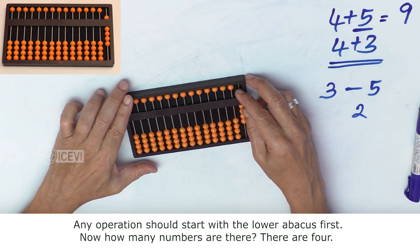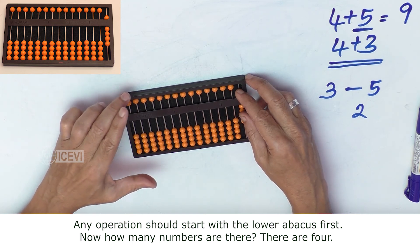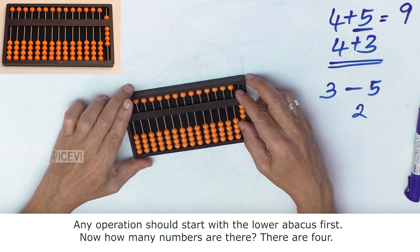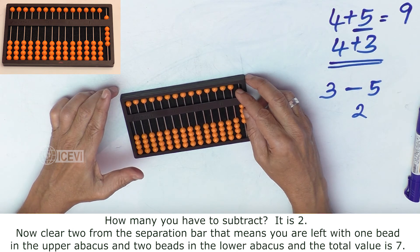Any operation should start with the lower abacus first. Now how many numbers are there in the lower abacus? There are 4. How many you have to subtract? It is 2.